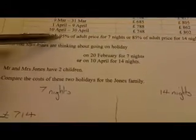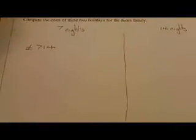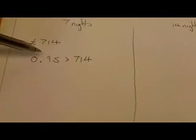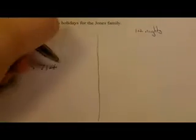Now the price of a child is 95% of the adult price. So to find 95% of 714, I'm going to do 0.95, multiply it by 714. So 0.95 is my multiplier to find 95%. I'm going to find 95% of 714. This time I'm not going to move the camera to the calculator. I'm just going to tell you now that when I type that in, I get £678.30.